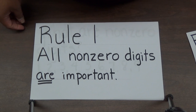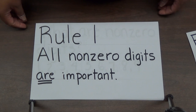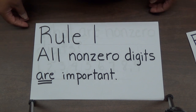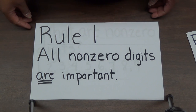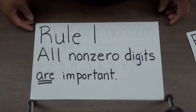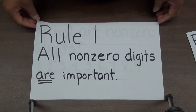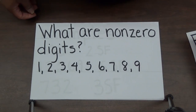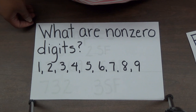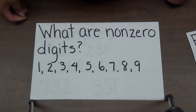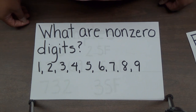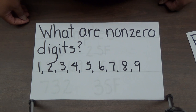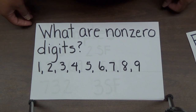Rule number one: all nonzero digits are significant. What are nonzero digits? They're the numbers 1, 2, 3, 4, 5, 6, 7, 8, and 9.